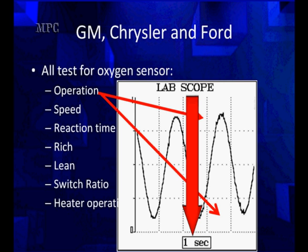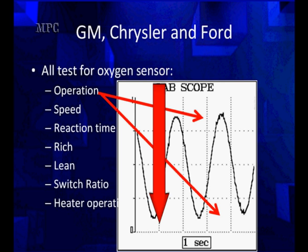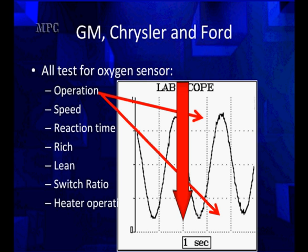Across the bottom, you see one second. That means we're looking at one second per division and in all of our scopes, we're going to have one second. In this particular case, it's a five second window. You'll see others where it's ten seconds on different models of scopes. But each individual little square represented by those four vertical lines represents one second.